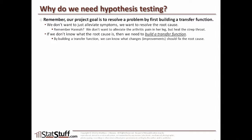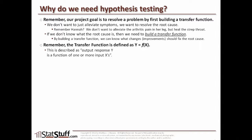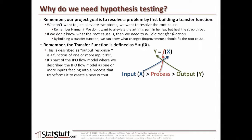By building the transfer function we can know what changes — what improvements we need to make that should fix the root cause. The transfer function is defined as y equals f of x: the output response y is a function of one or more input x's. It's part of the IPO flow model, where an input leads to a process and an output. The y refers to that output, and the x represents the inputs.